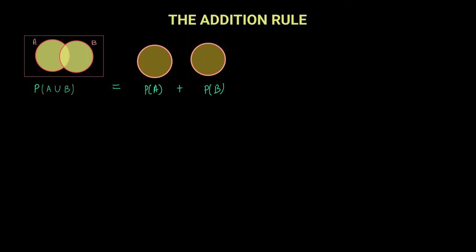So it is technically being added twice because you are not looking at it as one union right now. You are looking at it as two individual events, and therefore to avoid adding this intersection twice, we will need to minus this intersection once. This is how the addition rule comes about.